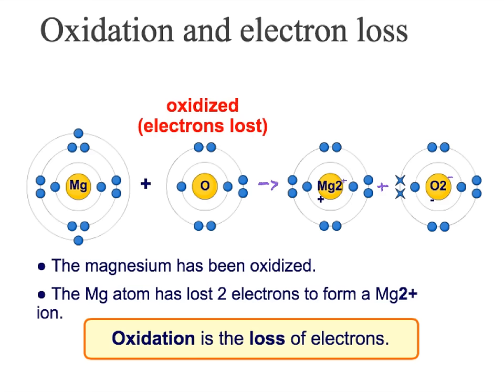Here we have an oxidisation. We have our magnesium atom and our oxygen atom. From C2, you should remember that magnesium has two electrons in its outer shell, whereas oxygen has six. In order to form an ionic compound, two of these electrons are transferred. Magnesium transfers its two electrons over to the oxygen. This means that the magnesium has been oxidised, as it has lost two electrons to form the Mg²⁺ ion. So oxidisation is the loss of electrons.